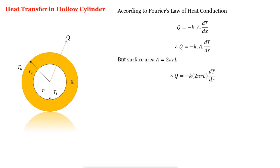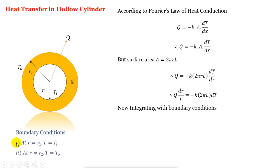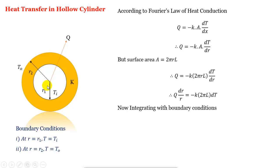Now we move dr and R to the left-hand side, so our equation becomes Q·dr/R equal to minus K·2πL·dT. Now integrating with the boundary conditions. The boundary conditions are: at R equal to R1, T equal to Ti — meaning at surface R1 we have temperature Ti — and at R equal to R2, T equal to To, meaning at surface R2 we have temperature To.